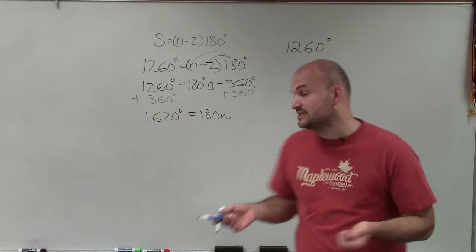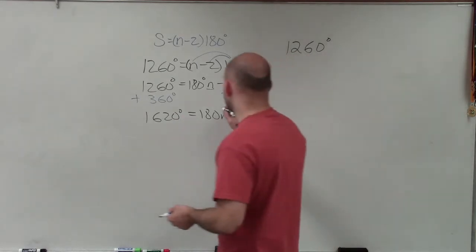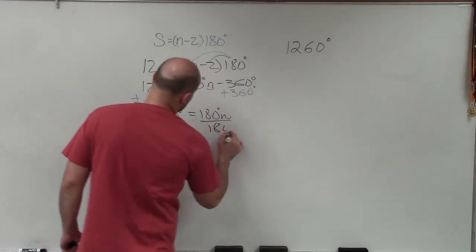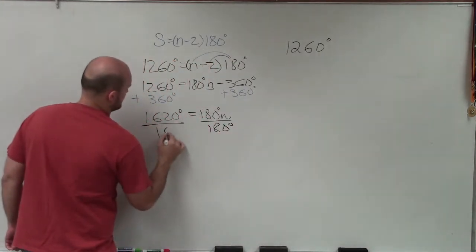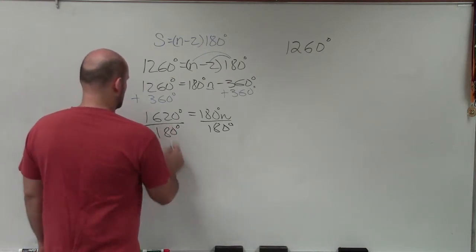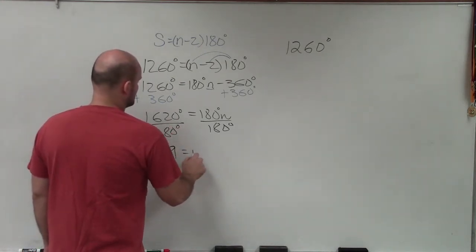Now, all I simply need to do is, again, solve for n. And I notice that my n is being multiplied by 180 degrees. So to solve for n, I'll just divide by 180 degrees. And when I do that, I end up getting 9 equals n.